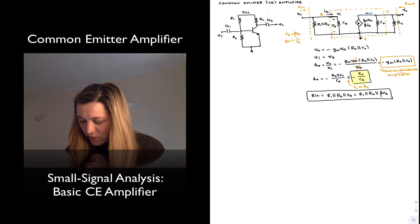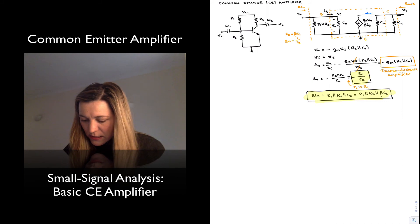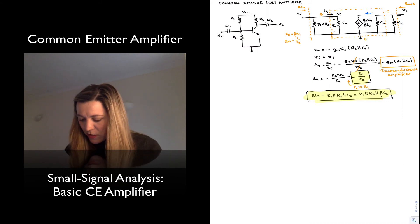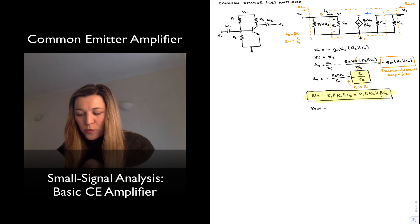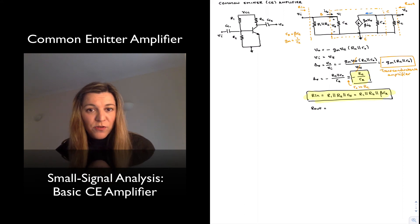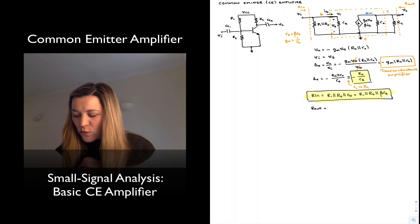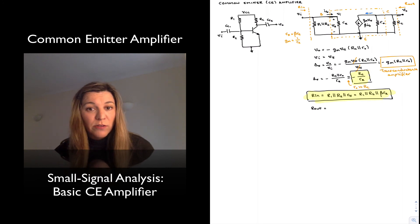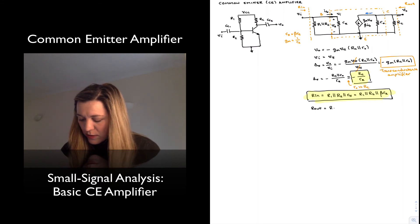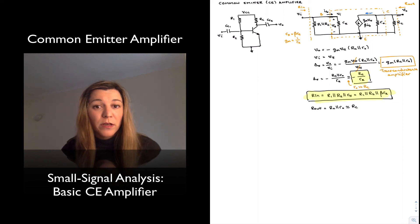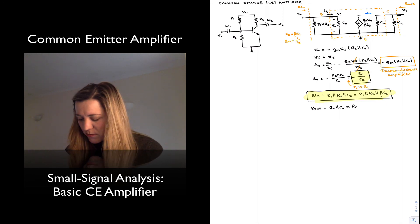Rout is the resistance seen looking from the Vout terminal. It is RC in parallel with ro. We assume the current source Gm·Vpi is an ideal current source with infinite output resistance, so it behaves as an open circuit when calculating equivalent resistance. Therefore Rout equals RC in parallel with ro, which is approximately equal to RC — assuming ro is much larger than RC, which is normally the case.